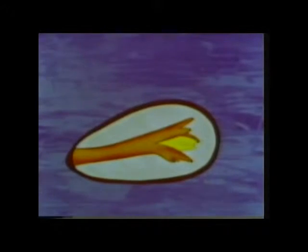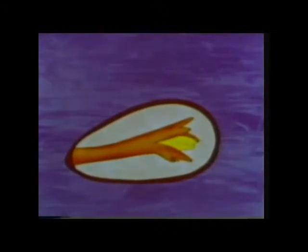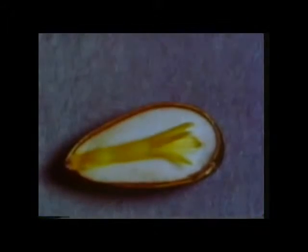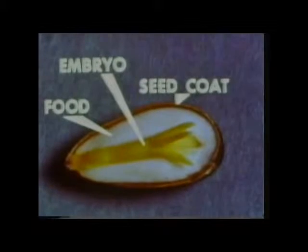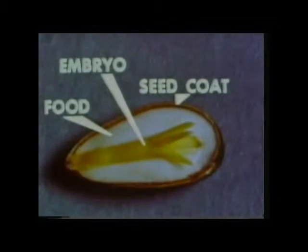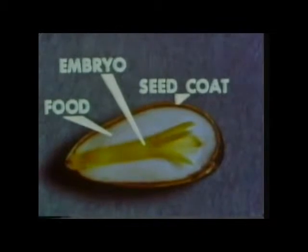After fertilisation, the fertilised egg cell grows and develops into a seed. This takes more than a year. The pine seed is made up of a seed coat on the outside, and inside, the food store that the embryo needs when it begins to grow into a new plant.